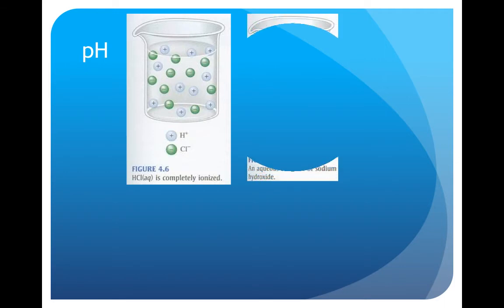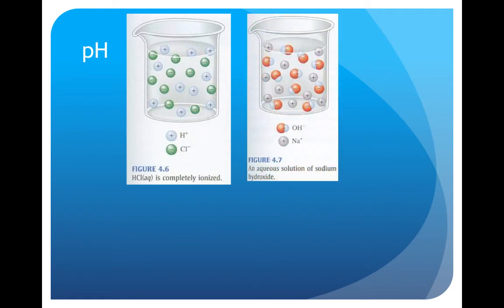A base, which is also called alkali, is a compound that accepts hydrogen ions and removes them from solution, or it can be a compound that donates hydroxide ions to the solution. For example, seawater is 8.5. Ammonia is 11.7. The higher the pH, the more basic. Therefore, it has lower hydrogen ions or higher hydroxide ions.